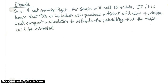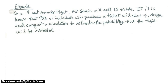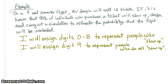Let's look at an example problem. On a 9-seat commuter flight, Air Georgia will sell 12 tickets. If it is known that 90% of individuals who purchase a ticket will show up, design and carry out a simulation to estimate the probability that the flight will be overbooked. I will assign digits 0 to 8 to represent people who show up, and digit 9 to represent people who do not show up.